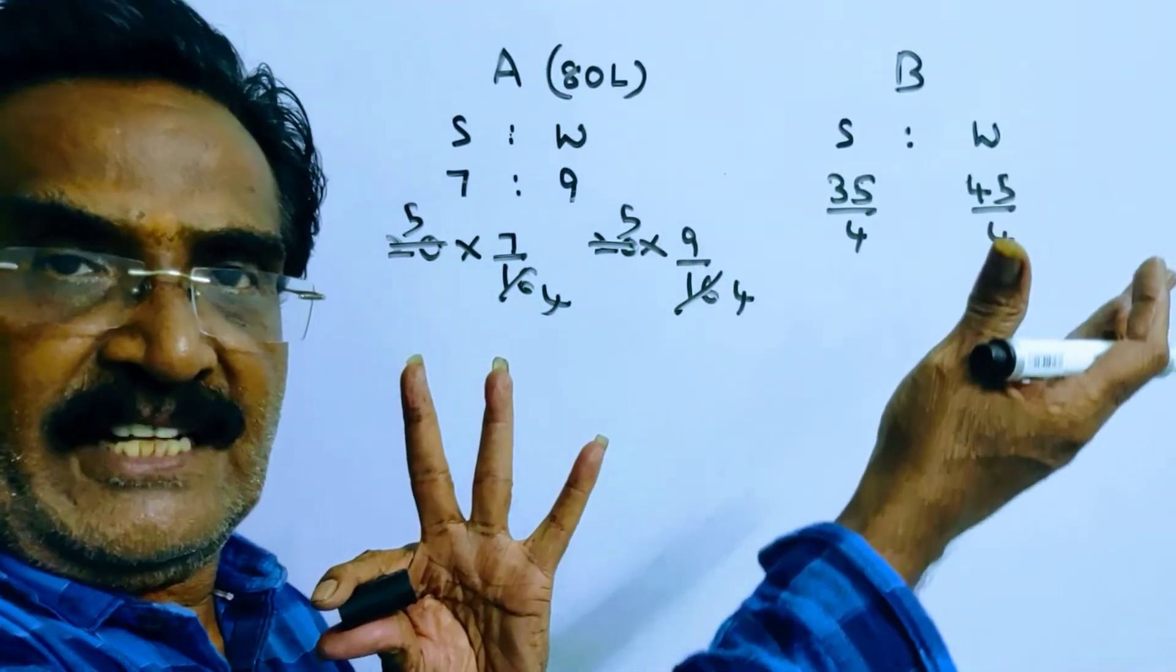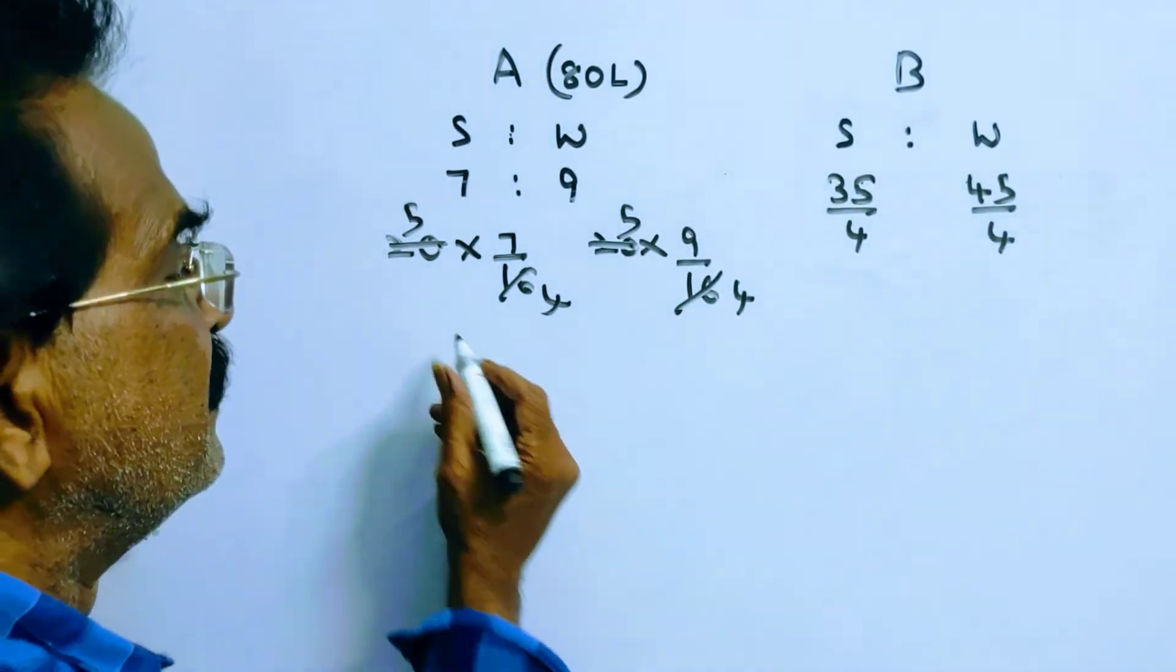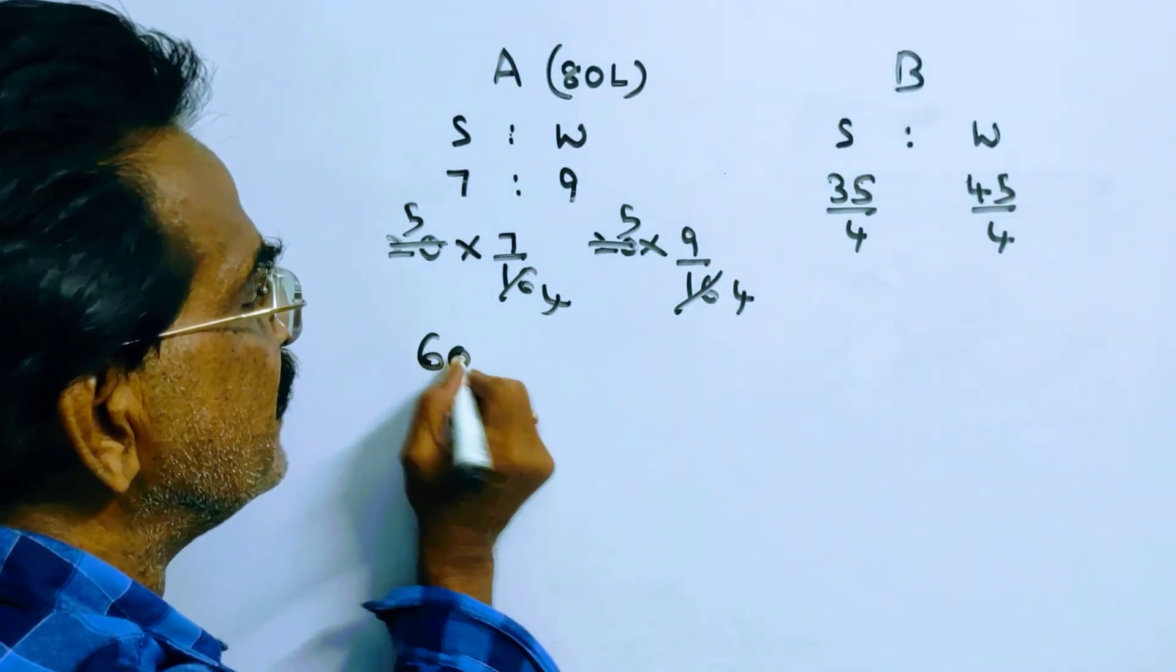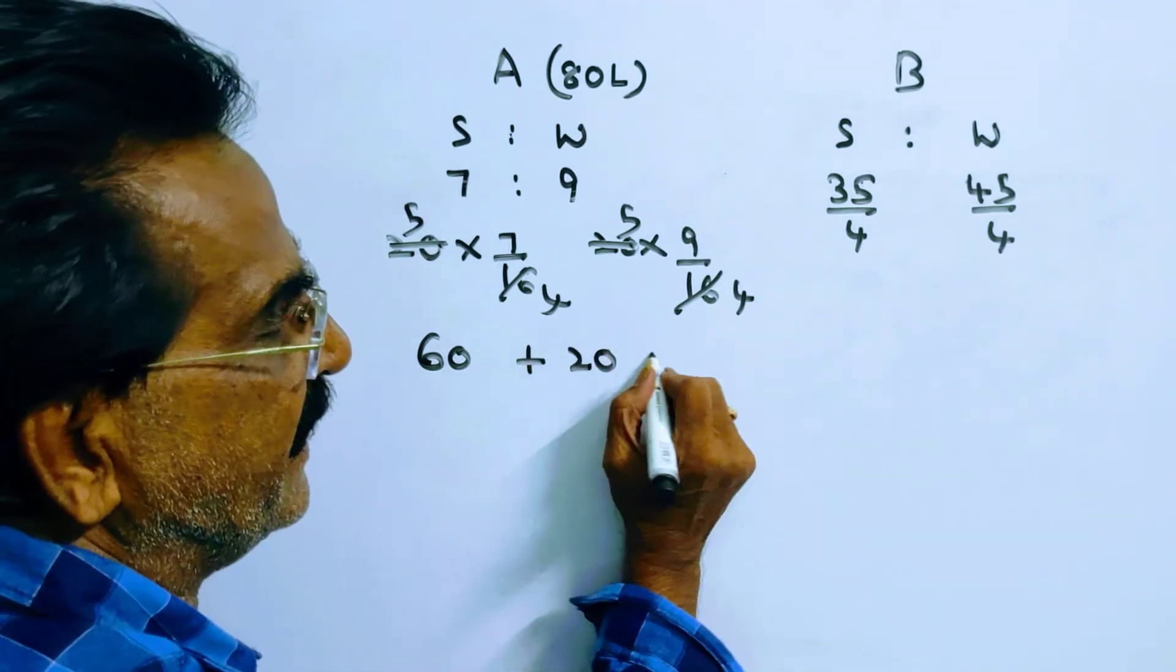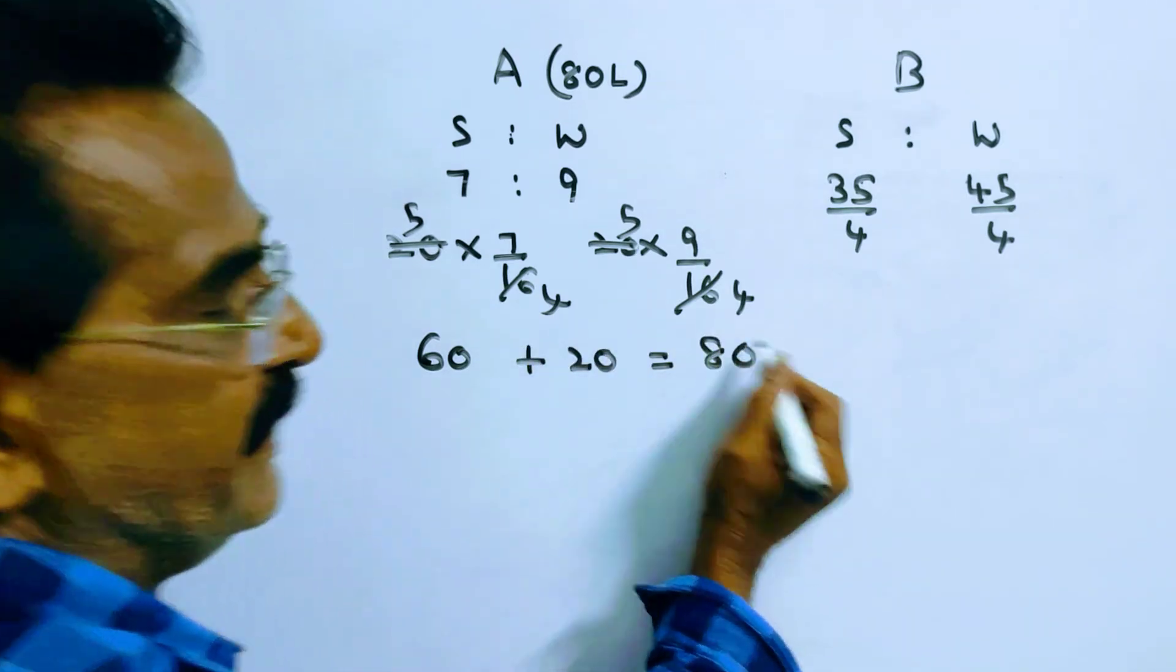Now 20 liters of mixture is transferred, so the remaining mixture is 60 liters. Now 20 liters of water is added, so the total mixture is 80 liters.